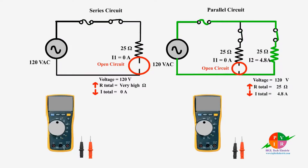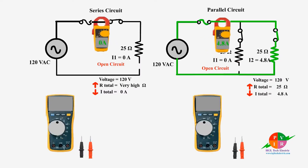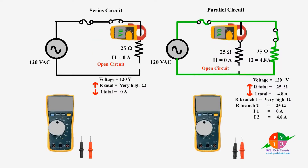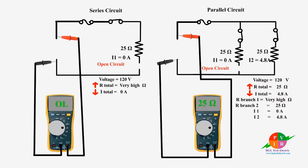It is more convenient to use a clamp-on meter to measure current in electrical circuits. In the series circuit there is only one path for current flow, so it does not matter where it is open — the flow of electrons stops completely. On the other hand, in the parallel circuit, it depends on where it is open. However, as a general rule, we can conclude that in both cases the resistance increases and the current decreases.